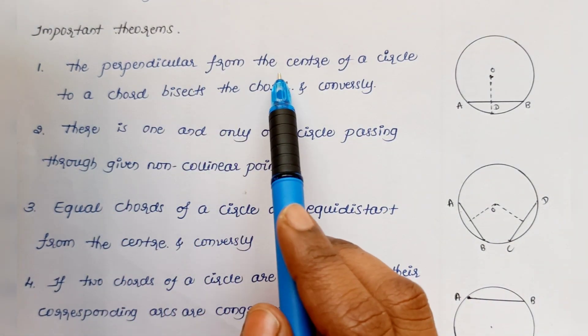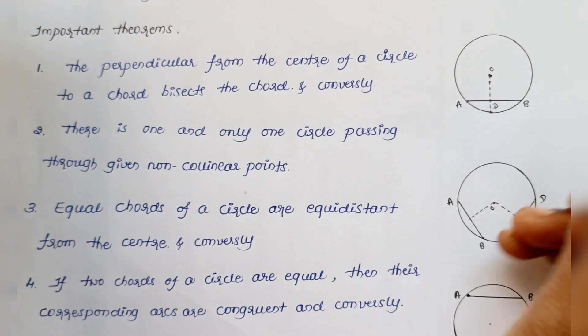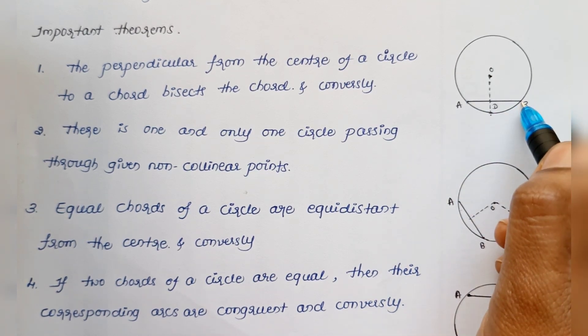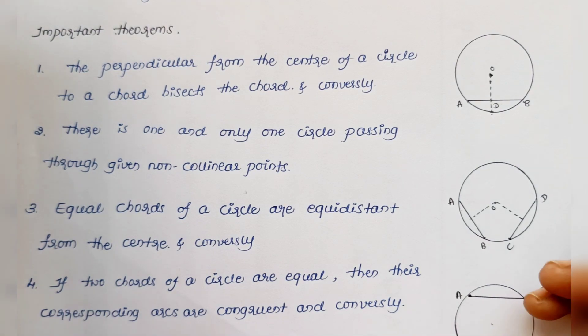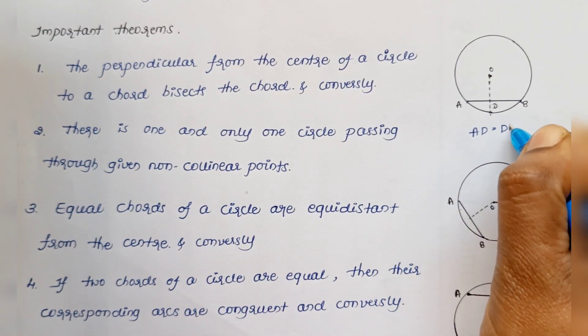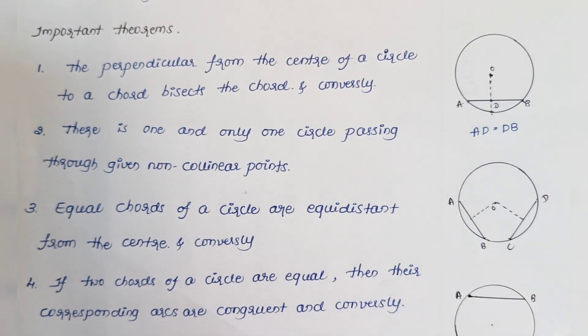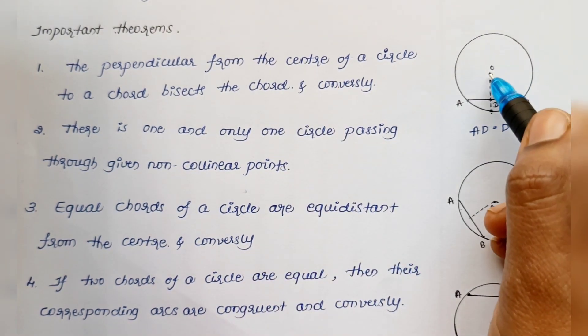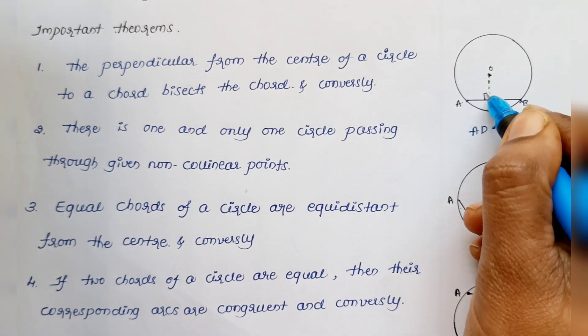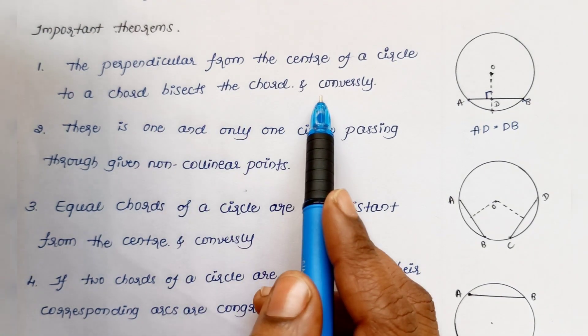The perpendicular from the center of a circle to a chord bisects the chord, and conversely. So this is the chord. The perpendicular from the center of the circle bisects the chord, meaning it divides the chord into two equal parts. AD and DB are equal. Conversely means if any line is dividing the chord into two equal parts, then that line will be perpendicular to the chord. That is the converse of this theorem.